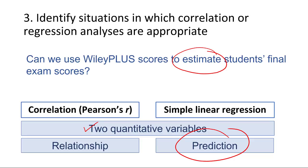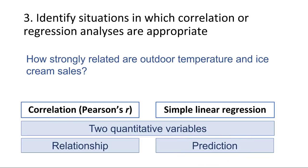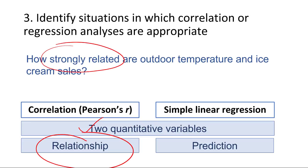One last example: how strongly related are outdoor temperature and ice cream sales? Both outdoor temperature and ice cream sales can be measured as quantitative variables. We're asking about the strength of a relationship rather than making a prediction, so correlation is the appropriate analysis here.